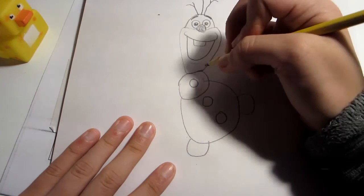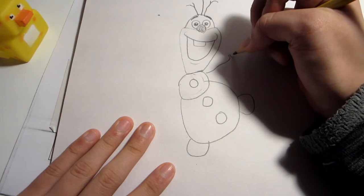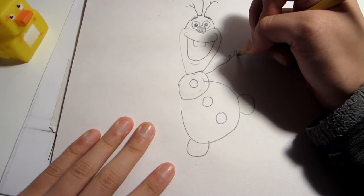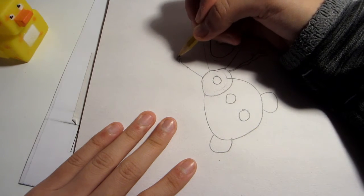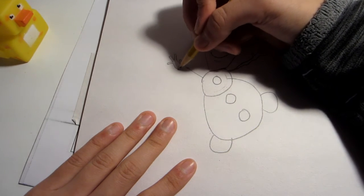Add some sticks on his head, make them look like twigs for hair. Then add his arms, which are also sticks, and try to make it look like a four-fingered cartoon character, so the twigs kind of look like four fingers.